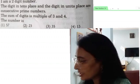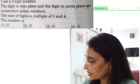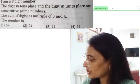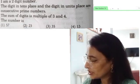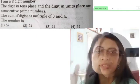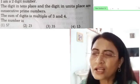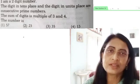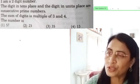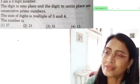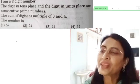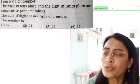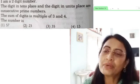I am a 2-digit number. The digit in tens place and the digit in units place are consecutive prime numbers. The sum of digits is multiple of 3 and 4. The number is: 57, 23, 35, 43. Every CEAT aspirant requested me to make videos on previous years CEAT question papers.